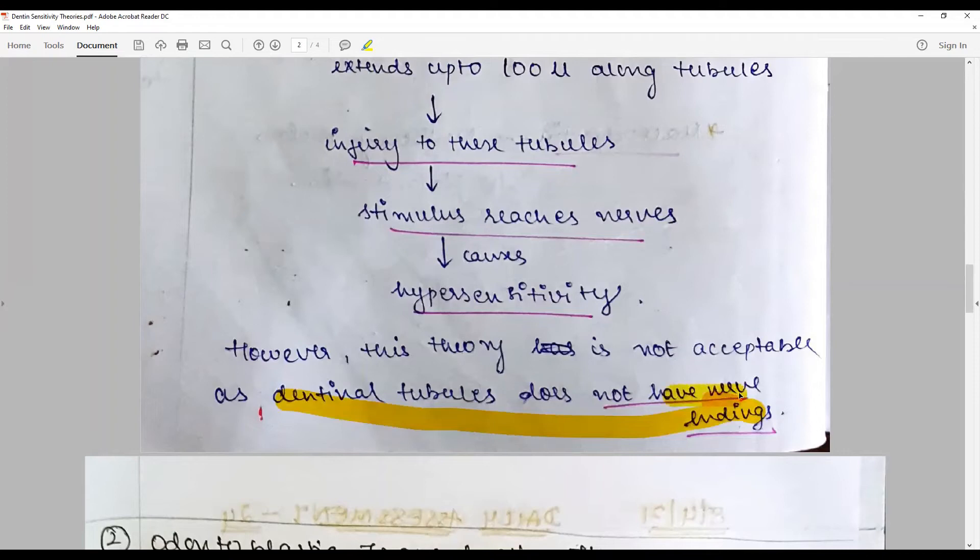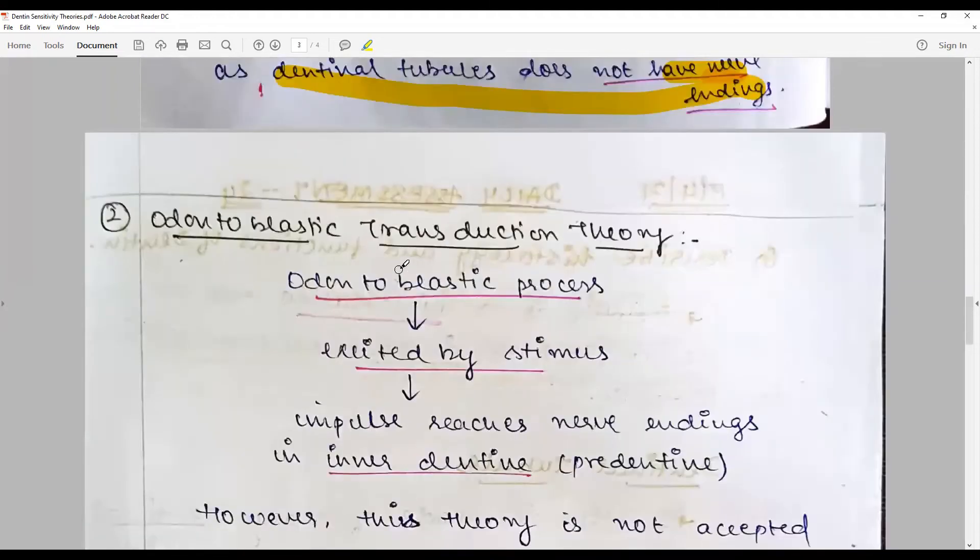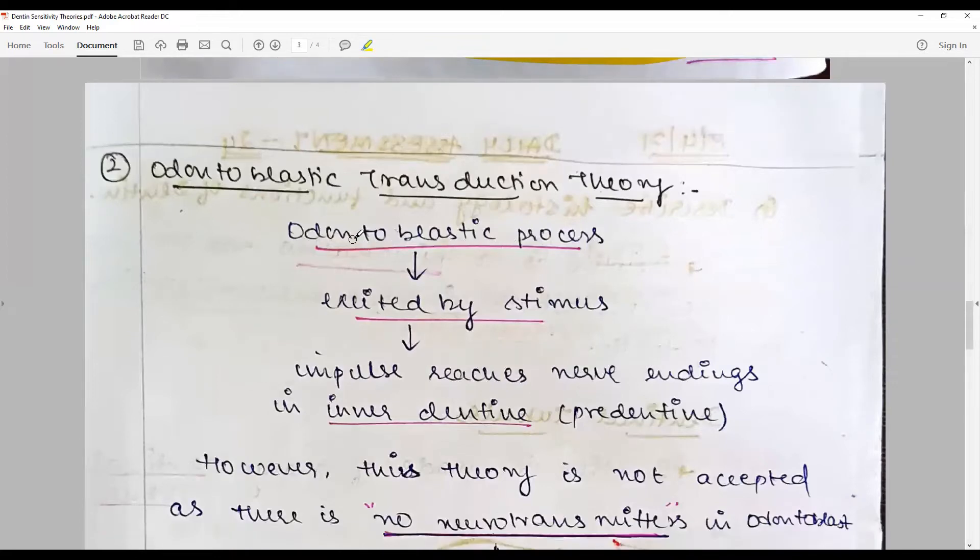The next was the odontoblastic transduction theory, and they believe that the odontoblastic processes are excited by the stimulus in the oral cavity and the impulse reaches the nerve endings present in the inner dentin or in the pre-dentin.